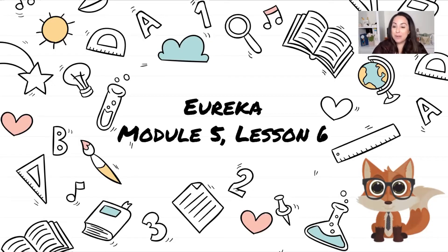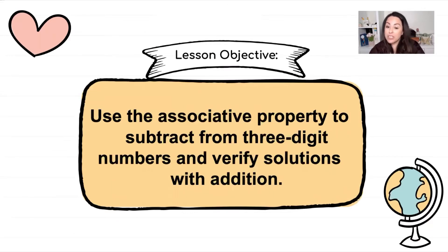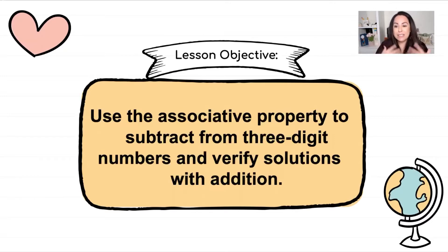Welcome back. Today we're going to be working on Eureka Module 5, Lesson 6. Our objective is to use the associative property to subtract from three-digit numbers. We can also verify solutions with addition. We're going to be using our strategy from Lesson 5 and making hundreds to make subtraction a little easier for us.